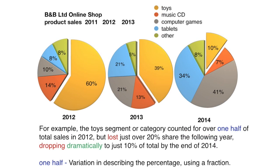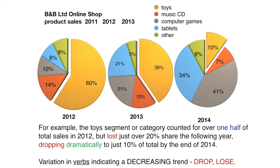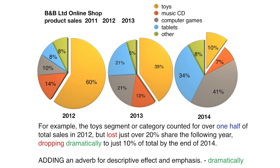In this sentence, note that I use the expression 'over one half' instead of saying 60%, just to change the language. And a couple of good decreasing trend verbs: to lose and to drop. And to finish off, a nice emphasis adverb: dramatically.